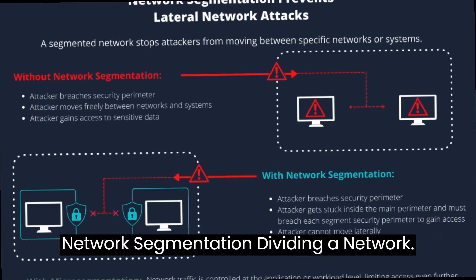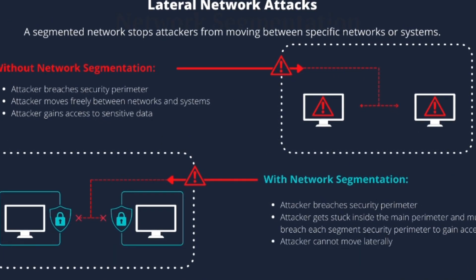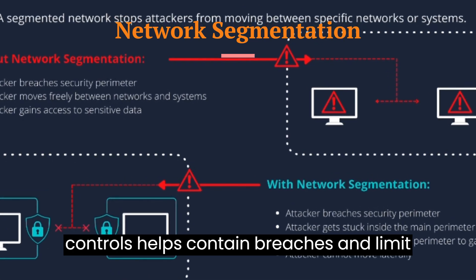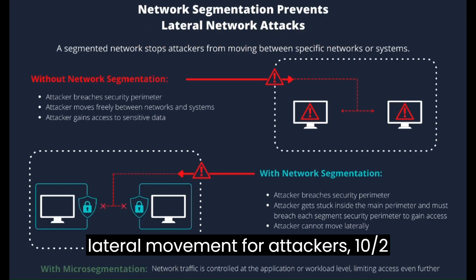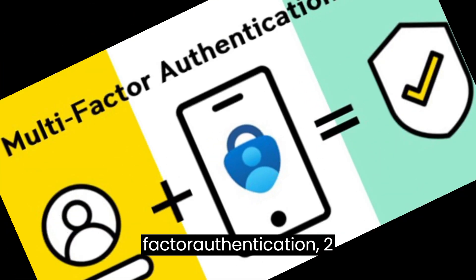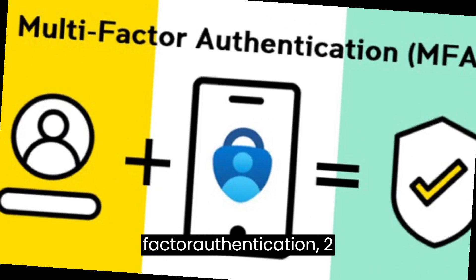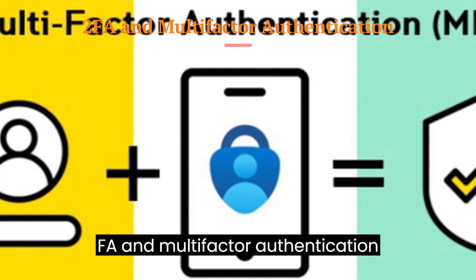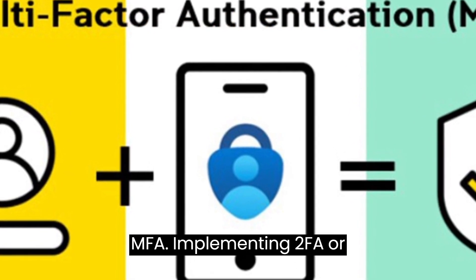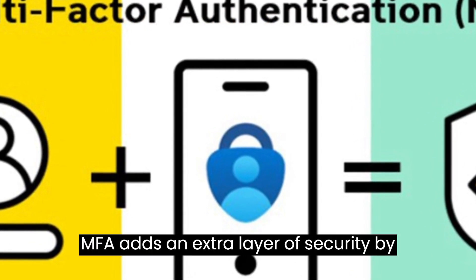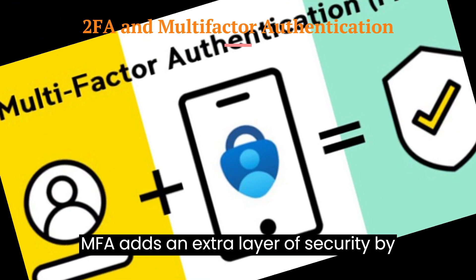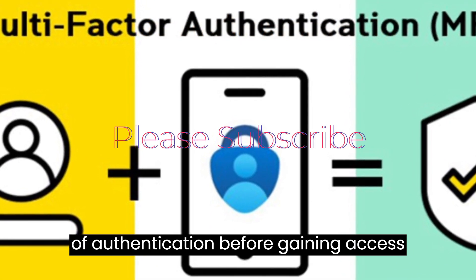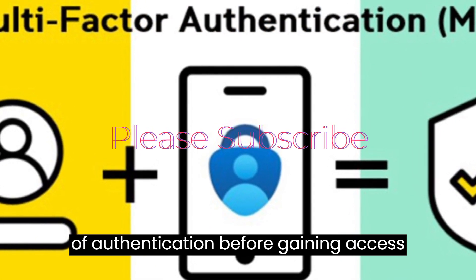9. Network segmentation. Dividing a network into segments or VLANs with strict access controls helps contain breaches and limit lateral movement for attackers. 10. Two-factor authentication, 2FA, and multi-factor authentication, MFA. Implementing 2FA or MFA adds an extra layer of security by requiring users to provide multiple forms of authentication before gaining access to a network.